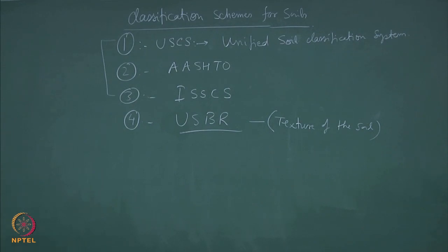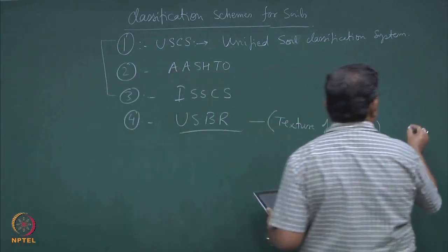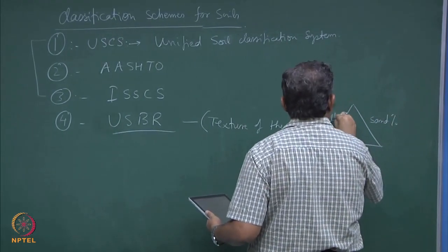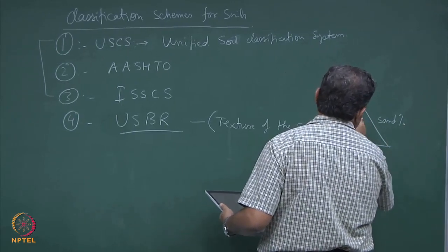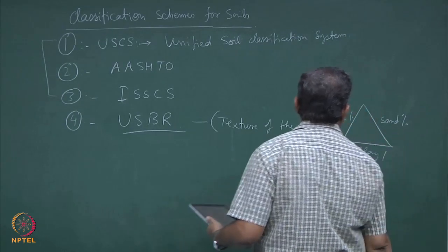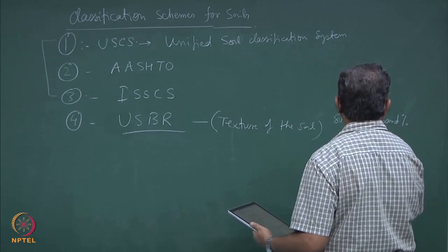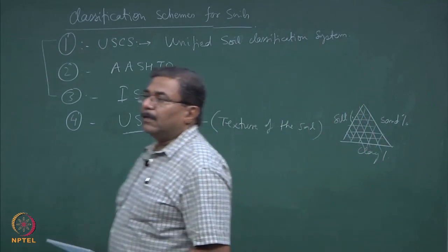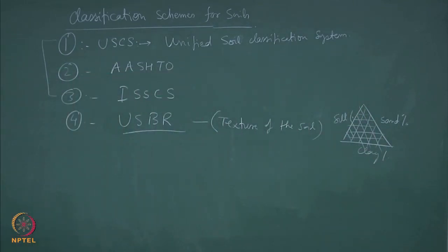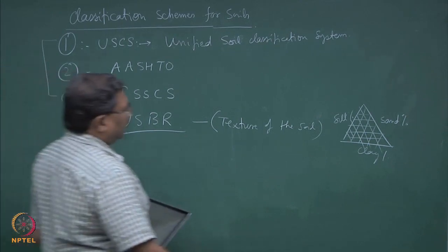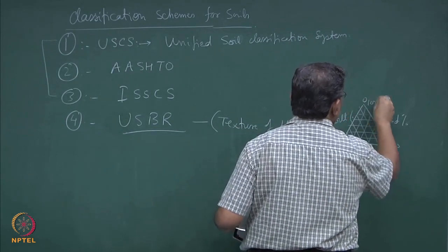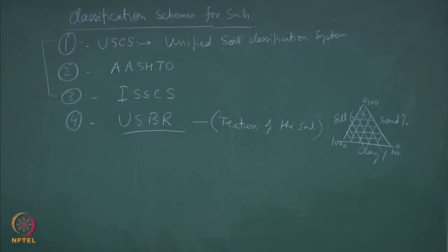USBR is not very much used in engineering practice, but those interested in agricultural engineering would use it much more. It depends upon the texture of the soils — we talk about sand fraction, silt fraction, and clay. So this becomes a three-dimensional graph with axes 0 to 100, 0 to 100, 0 to 100. We normally do not use it in geomechanics.